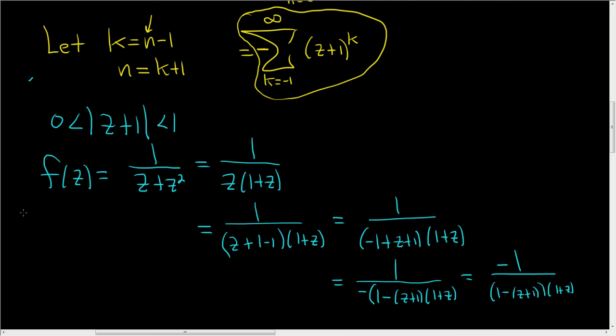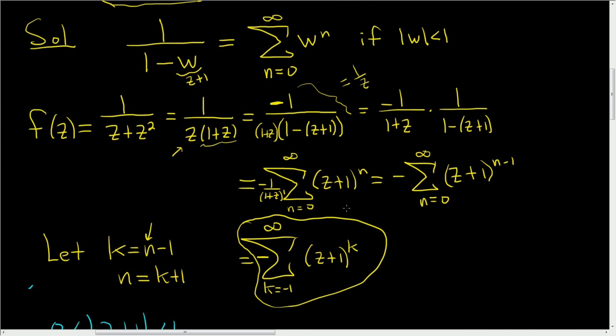So negative 1 over 1 minus z plus 1, 1 plus z. So that's exactly what we did up here, but we did it in a single step. So I hope this helps.